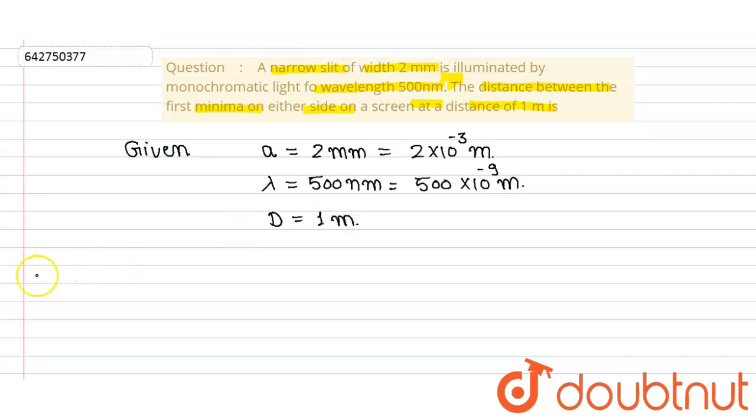According to that question he says the distance between first minima from both the side, first minima. So what is the formula? In that case the formula becomes 2 lambda capital D upon small a.